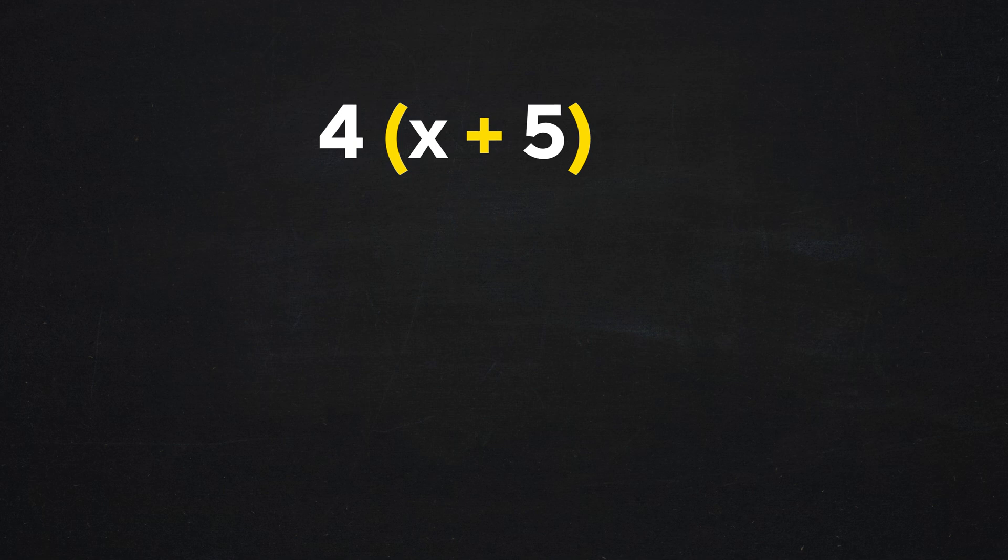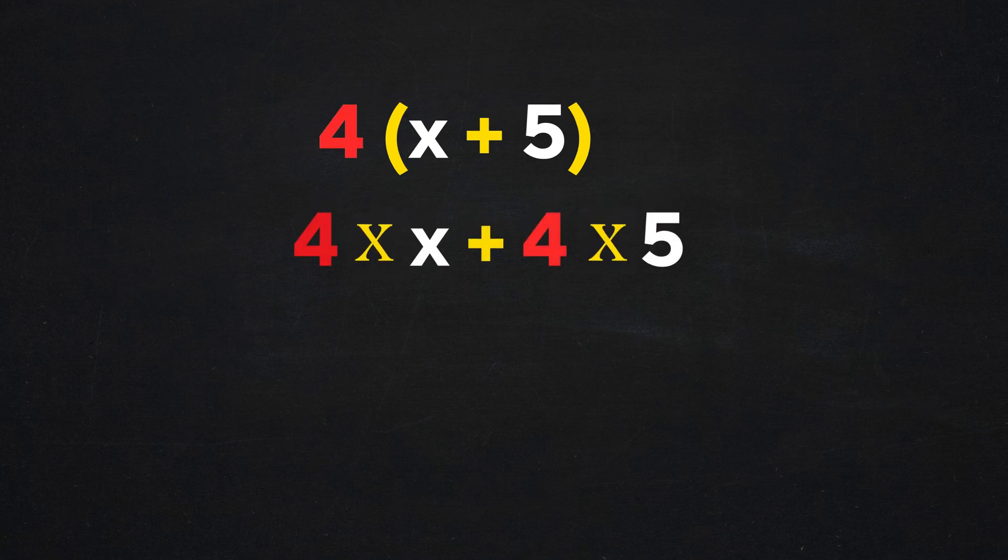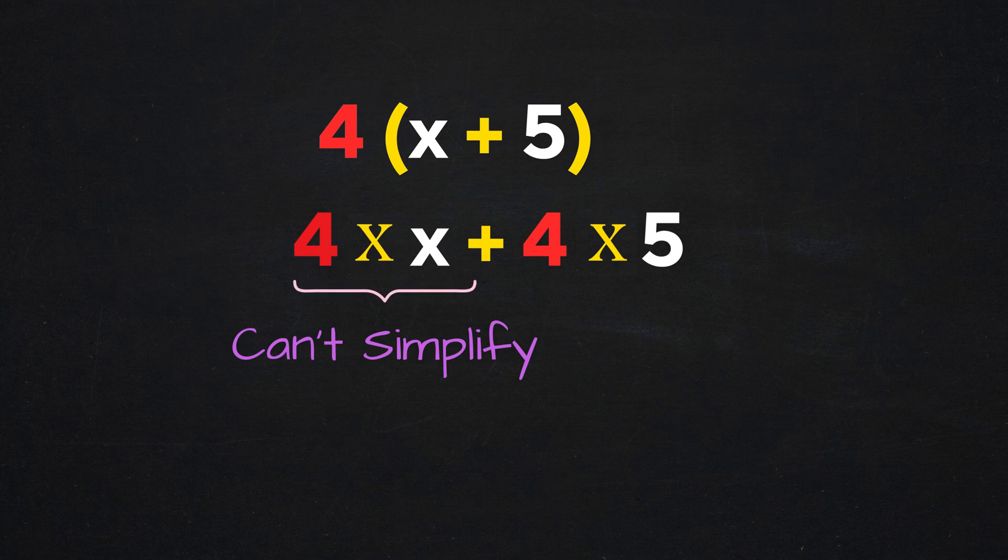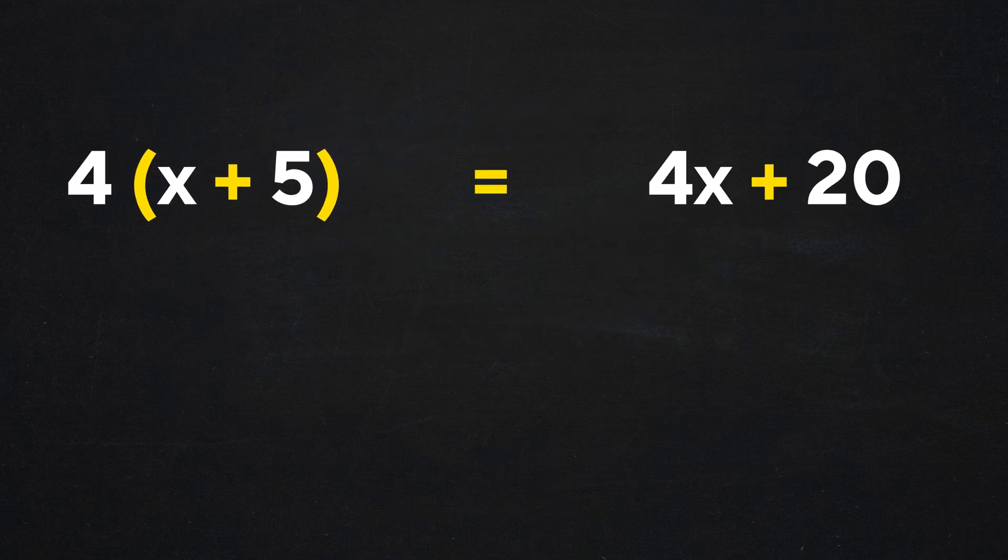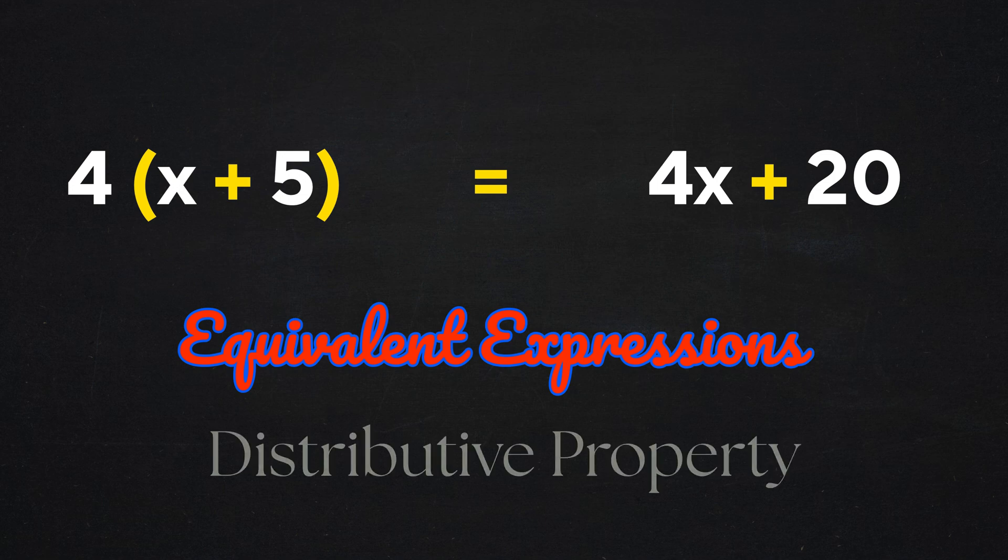Just like in arithmetic, we distribute the factor 4 to each term inside the parentheses, which eliminates the grouping. So we get 4 times x plus 4 times 5. While we can't simplify the 4x any further because we don't know what x is, we can simplify 4 times 5 to get 20. The distributed form of the expression is 4x plus 20. Even though we can't simplify these expressions into a single numeric answer without knowing the value of x, we can still say these two expressions are equivalent because they follow the rules of the distributive property.